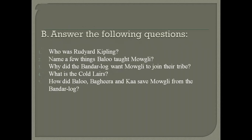Now in Exercise B, you have to answer these questions, maybe in a sentence or two. The first question is: who was Rudyard Kipling? You have to write in perhaps two to three sentences.